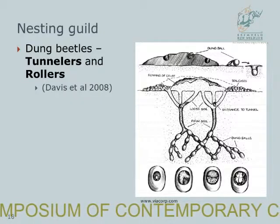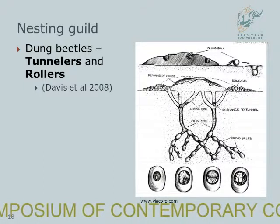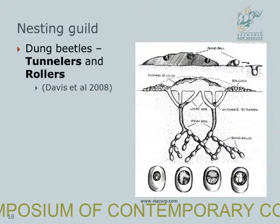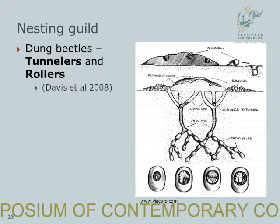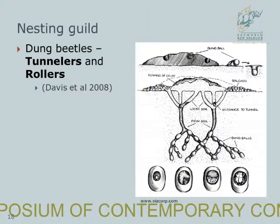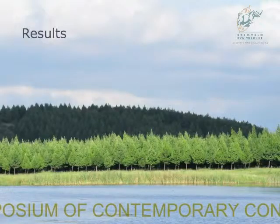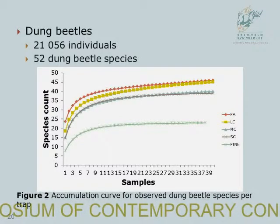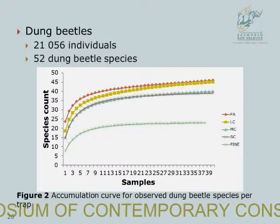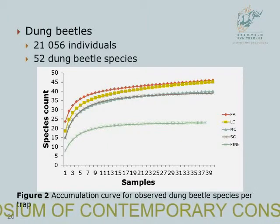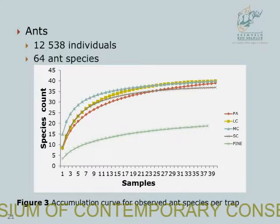I also split my dung beetles into two groups according to nesting behaviour: those that nested directly in the dung and beneath it I grouped into one group called tunnelers, and I also had rollers which rolled the dung away. In total, I sampled 21,000 dung beetle individuals sorted to 52 dung beetle species or morphospecies, and 12,000 ants sorted to 64 ant species.